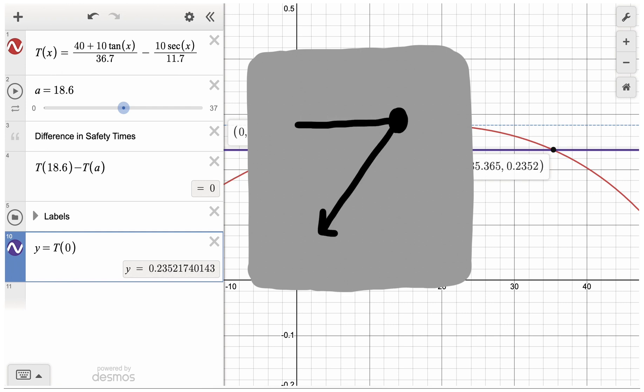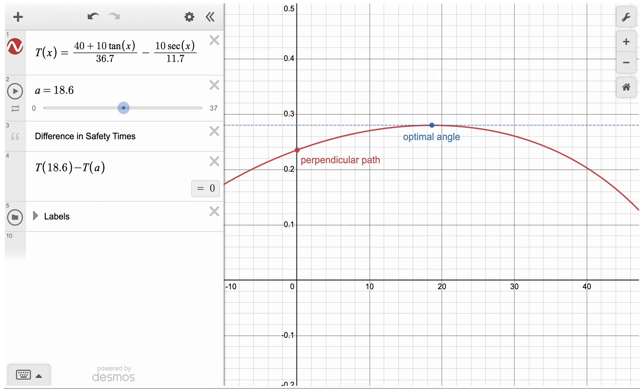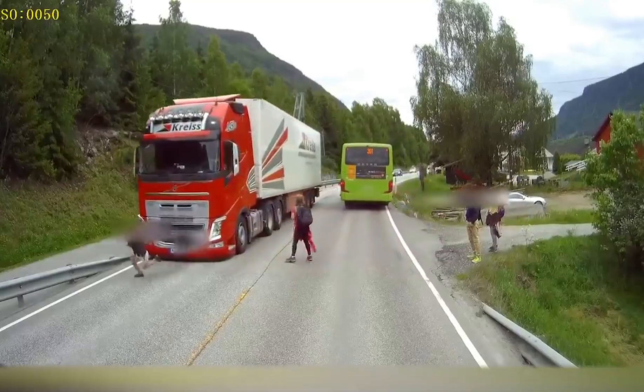Is it safer for Sarah to err heading at a larger angle or a smaller angle? We can also use this graph to answer this question. Since the curve is pretty symmetric around the optimal angle, it doesn't make much difference whether she errs by heading at a smaller angle, which is closer to perpendicular, or at a larger angle. Although if I were in this situation, I would err on the side of taking a larger angle, giving the driver more time to slow down or swerve. This is what saves one of the pedestrians in the video you saw earlier.